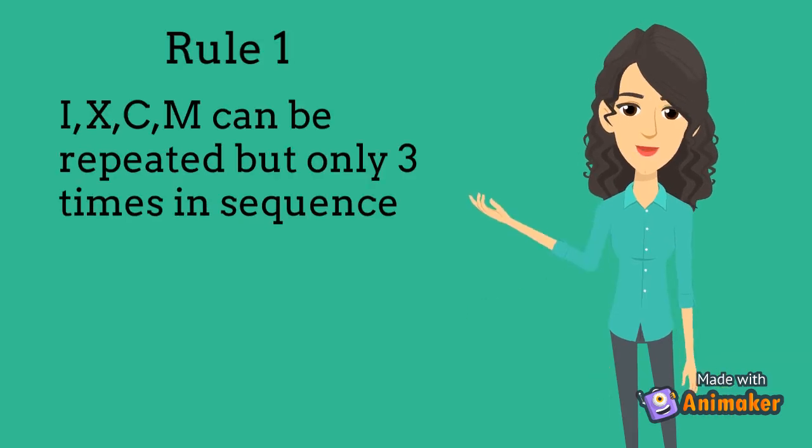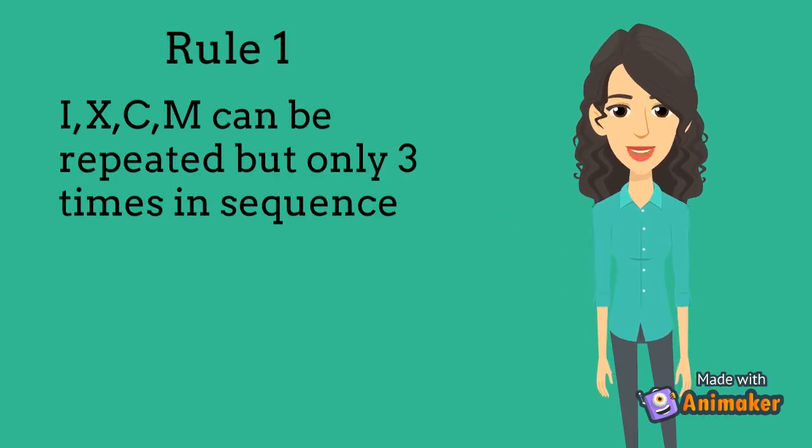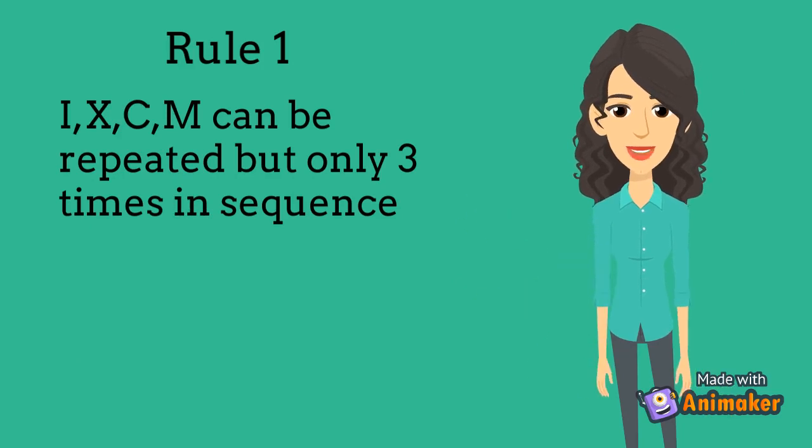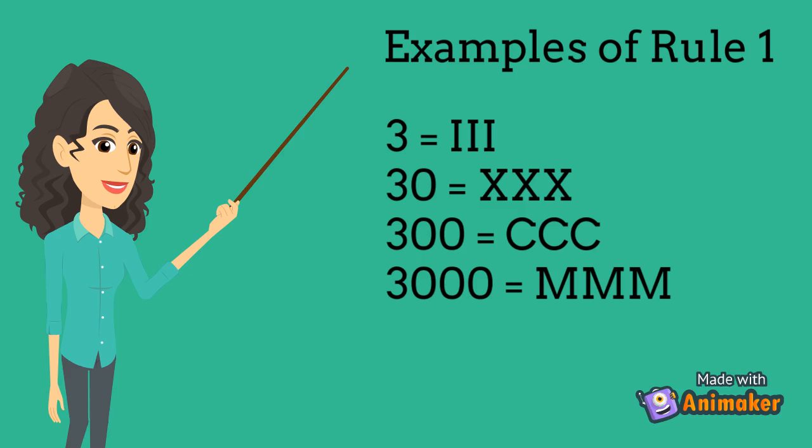Rule 1. I, X, C, M can be repeated but only 3 times in sequence. Examples for Rule 1: 3 equals III, 30 equals XXX, 300 equals CCC, 3000 equals MMM.